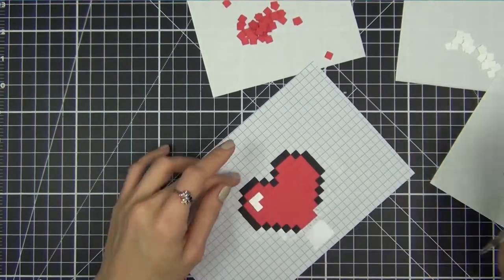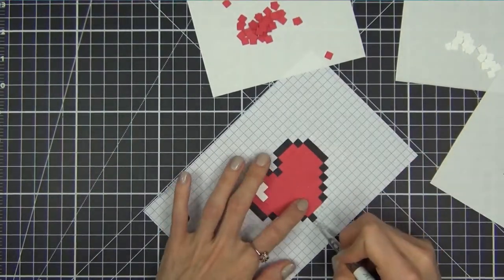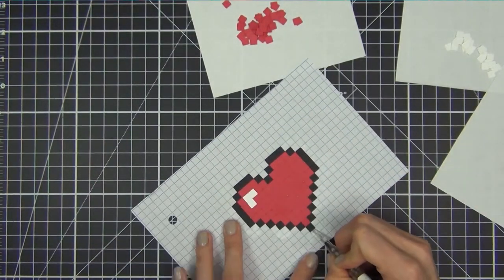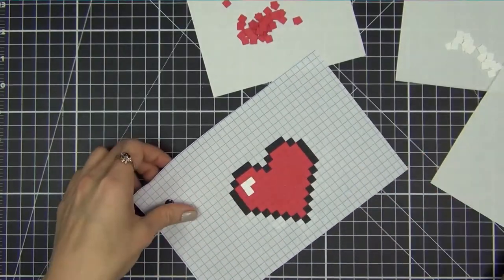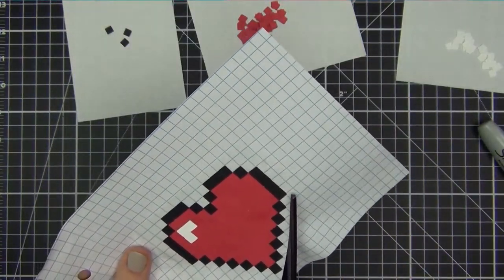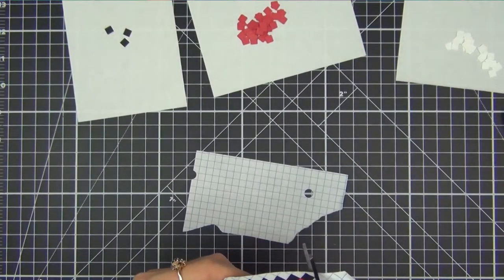This step may be tedious for some, but I like to just settle in and listen to audiobooks while I do this sort of thing. Of course, you could just color the grid paper in with markers or pencils, but I think this method is so cool, and it makes the card a lot more special.